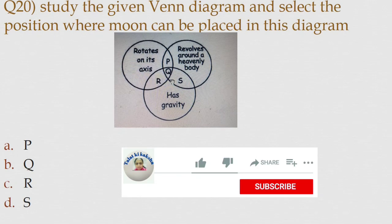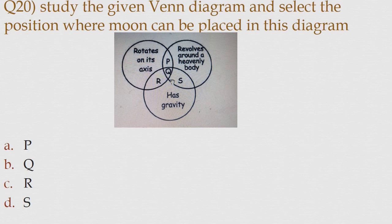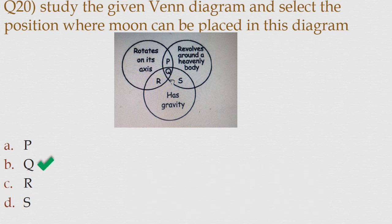Question number 20. Study the given Venn diagram and select the position where moon can be placed in this diagram. Option A: P. Option B: Q. Option C: R. Option D: S. The correct answer is option B: Q.